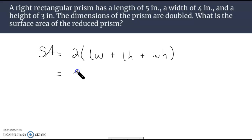But keeping in mind here on this problem we're doubling everything. So instead of five, four, and three we're doing ten, eight, and six. So we can do ten times eight, ten times six, and then finally six times eight.